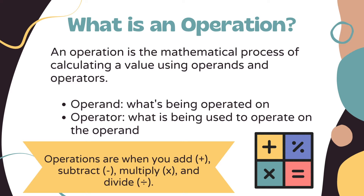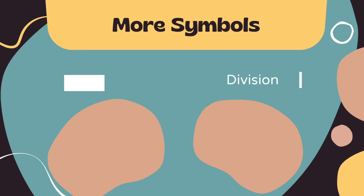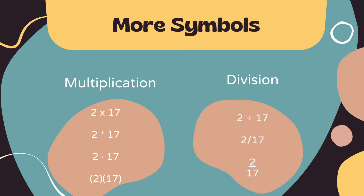Basically, operations are just when you add, subtract, multiply, and divide. It's pretty easy to recognize addition and subtraction because you just look for the plus symbol or minus symbol respectively, but multiplication and division have multiple symbols that could tell us that we're using one of those operations.